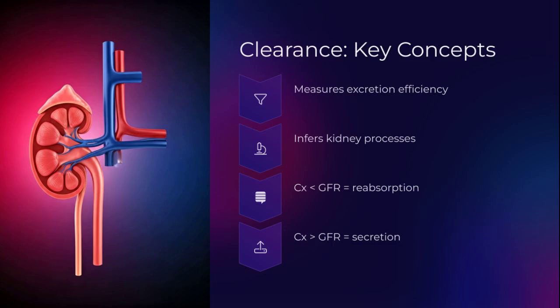Clearance helps us map what's happening inside the nephron. If clearance is less than GFR, reabsorption is likely. If it's more, secretion is at play. If equal, the substance is freely filtered with no tubular handling. A physiological detective story — every result has a tale to tell.